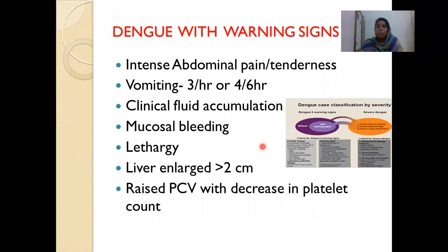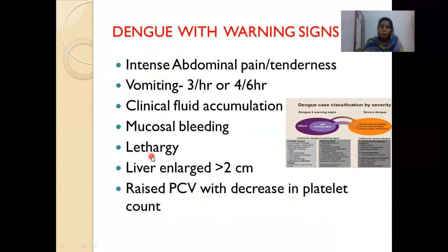Coming to dengue with warning signs: intense abdominal pain or tenderness — because of rapid accumulation of fluid in the pararenal and perirenal areas and splanchnic vasoconstriction due to capillary leak; vomiting at least 3 episodes per hour or 4 to 6 episodes per 6 hours; clinical fluid accumulation such as ascites or pleural effusion; mucosal bleed; lethargy due to cerebral hypoperfusion; hepatomegaly more than 2 cm; or rising PCV with decrease in platelet count.